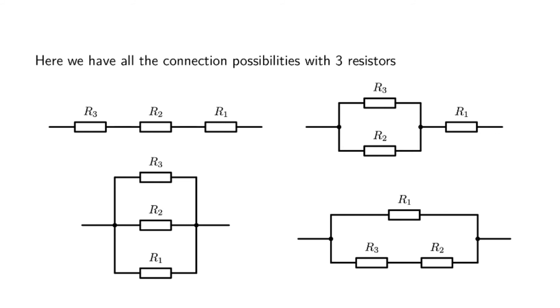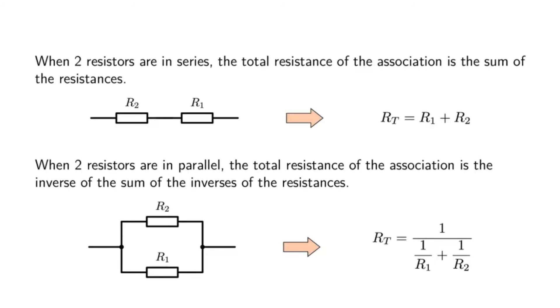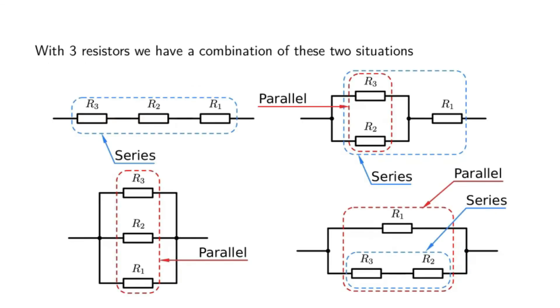When two resistors are in series, the total resistance of the association is the sum of the resistance R1 and R2. When two resistors are in parallel, the total resistance of the association is the inverse of the sum of the inverses of the two resistances.